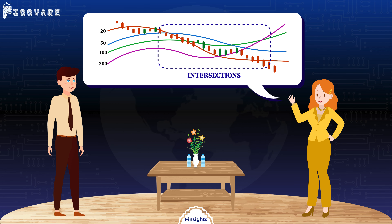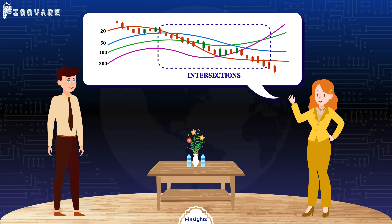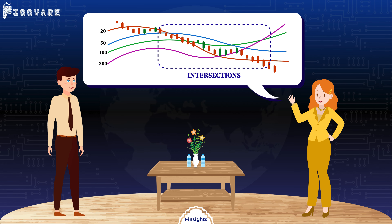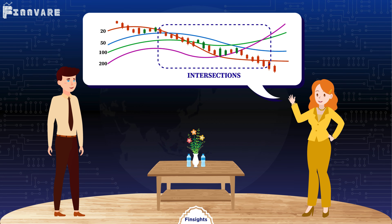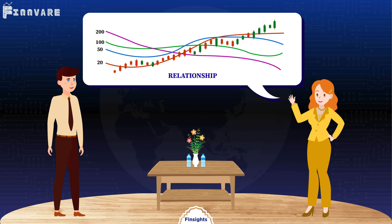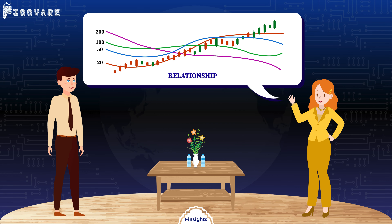The price usually intersects with these EMA or DEMA multiple times. When all EMA or DEMA intersect with each other, it signals a trend change from bullish to bearish, or vice versa, completing one full cycle based on price or time formations. Price and EMA or DEMA are interdependent — if they drift apart, they will eventually come back together.